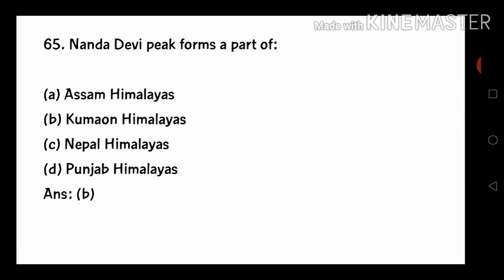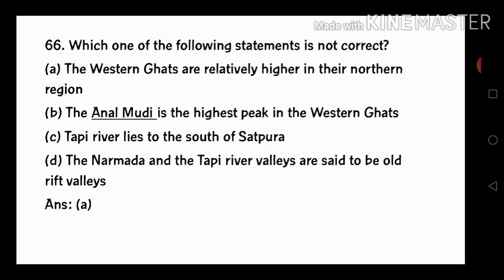Next question is number 66: which one of the following statements is not correct? First, the Western Ghats are relatively higher in their northern region. Second, the Anaimudi is the highest peak in the Western Ghats. Third, the Tapi River lies to the south of Satpura.